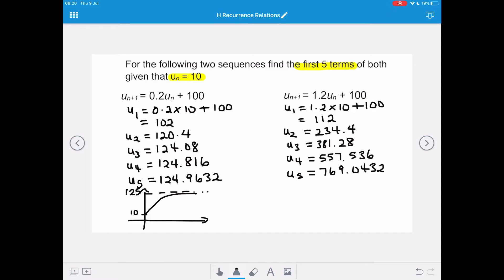In our second sequence, un+1 equals 1.2un plus 100, we're still starting at the same point on our y-axis at 10, but you can see that the curve is going up exponentially as the value of n increases.